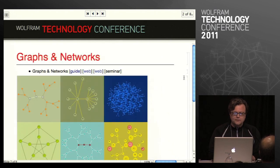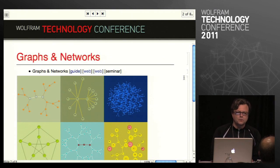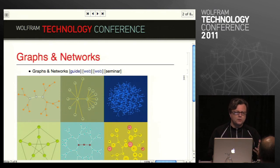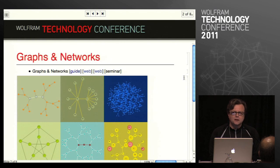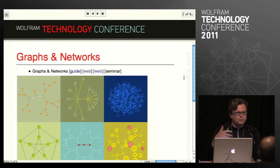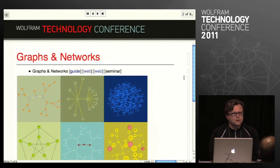The next area we worked on was graphs and networks. Version 8 had a first iteration of integrated support for graphs and networks. For many years we had a package called Combinatorica that provided quite a lot of functionality, but it wasn't properly integrated, wasn't at the performance level, and couldn't interact well. Graphs and networks are taking off in a lot of disciplines, and one thing that's particularly hot right now is social media.